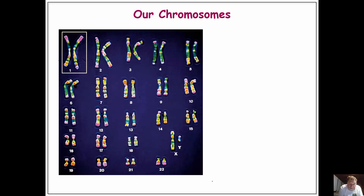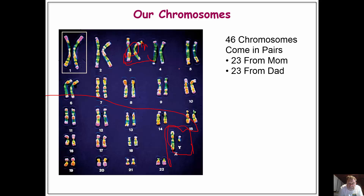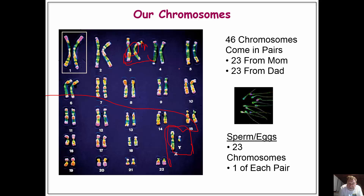Let's take a look at our chromosomes. This is a human karyotype. We have our sex chromosomes in this area right here, and we have our autosomes — the remaining 22 chromosomes over here. In those chromosomes we have what we call a homologous pair: one from your dad and one from your mom. Every individual is going to have 44 autosomes plus 2 sex chromosomes.